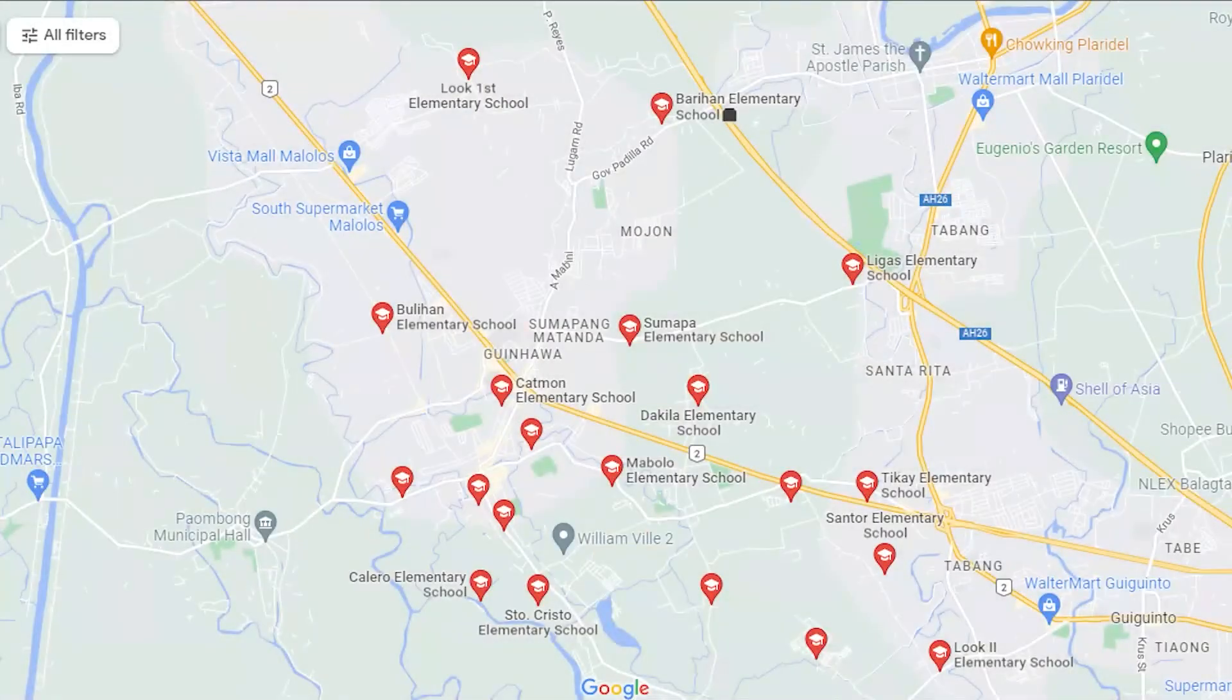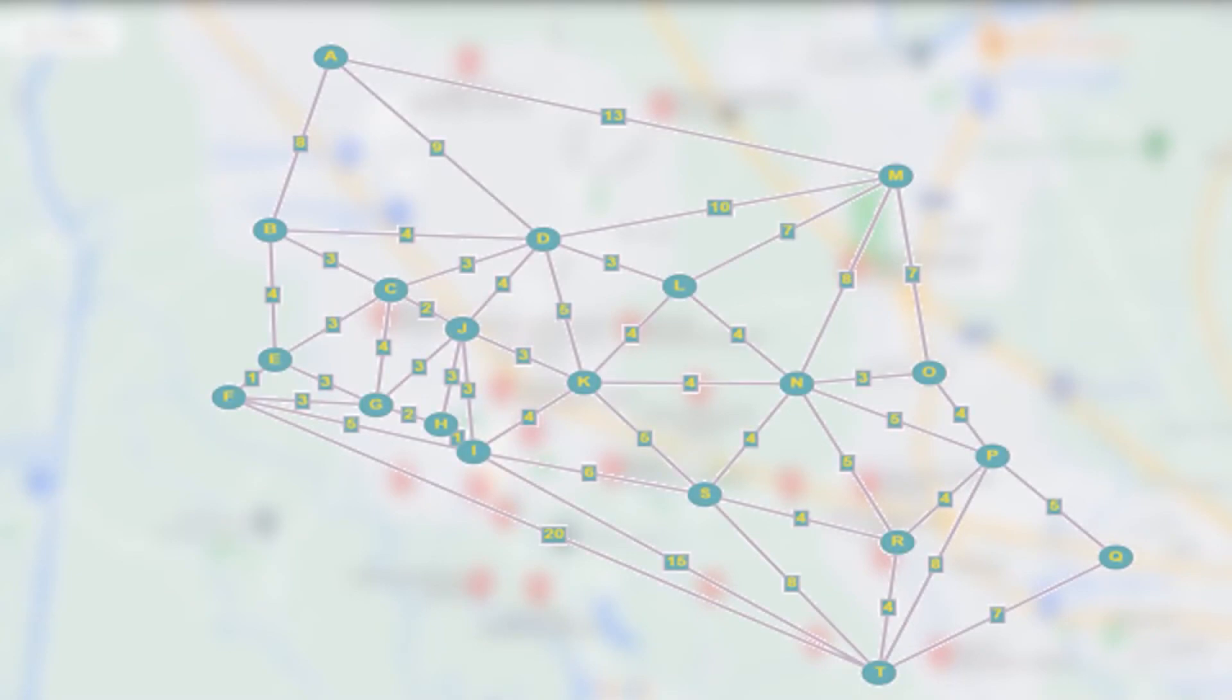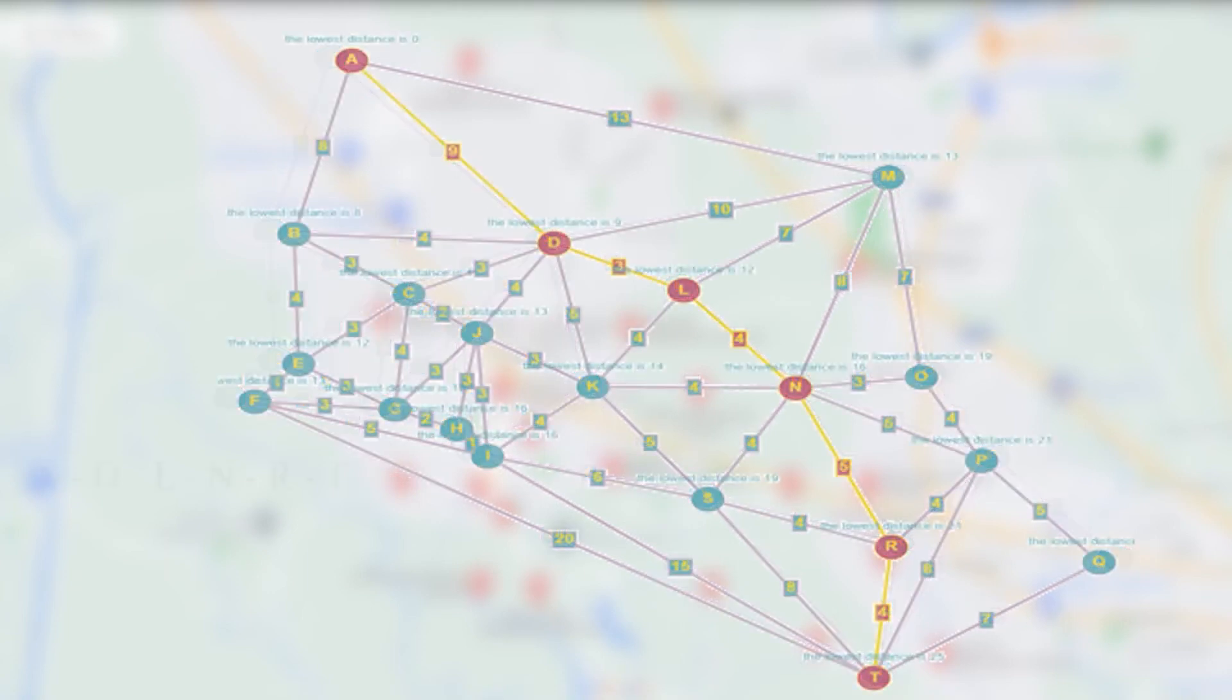Based from the algorithm, the path from Luok First Elementary School, which is vertex A, to Sumapa Elementary School, which is vertex D, then to Dakila Elementary School, which is vertex L, then to San Pablo Elementary School, which is vertex N, then to Bangkal Elementary School, which is vertex R, and lastly, to Mambog Elementary School, which is vertex T, is the shortest path. It is represented as A to D to L to N to R to T, which is mathematically equivalent as 9 plus 3 plus 4 plus 5 plus 4 equals 25.